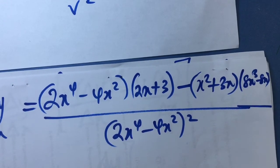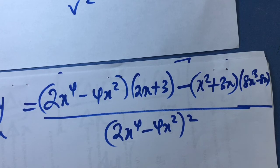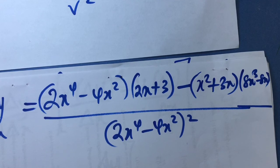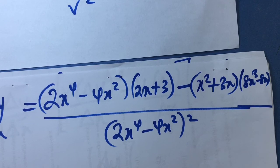Go over this video once more carefully, seeing what I have done from the beginning. What I have shown you is how to obtain the quotient rule of differentiation using the first principle, and how to use it to solve problems. Remember, you can only use the quotient rule when a function is expressed as a quotient. If it is expressed as a product, use the product rule. Please subscribe to the channel, turn on your notification bell, and I'll see you in my next video. Thank you.